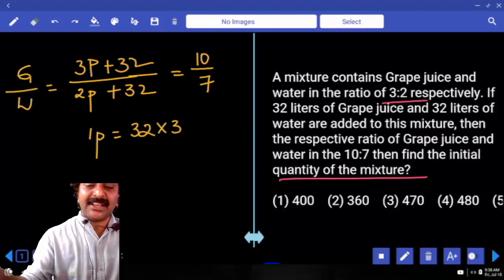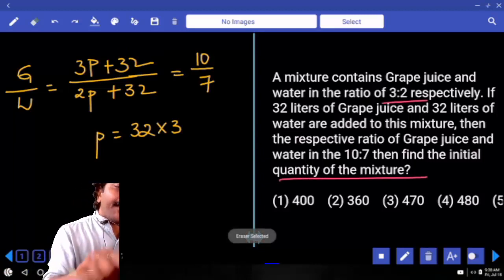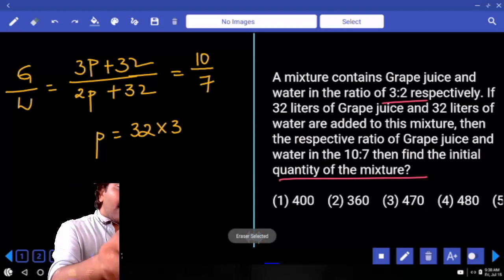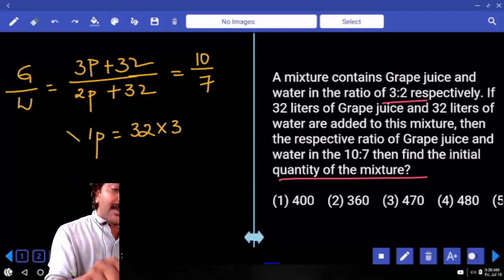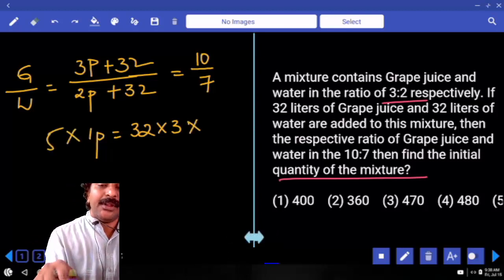Initial quantity in the mixture is 5 parts, right? 5 parts in the sense, so I am taking into 5 times, into 5 times.